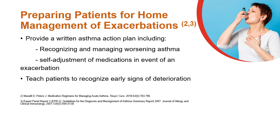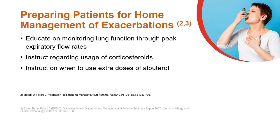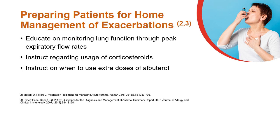For home management of asthma exacerbations, provide an action plan that includes recognizing and managing worsening asthma, followed by self-adjustment of medications in response to acute symptoms or changes in peak expiratory flow rates. During an exacerbation, teach patients to recognize early signs of deterioration and educate them on monitoring lung function through peak expiratory flow rates.